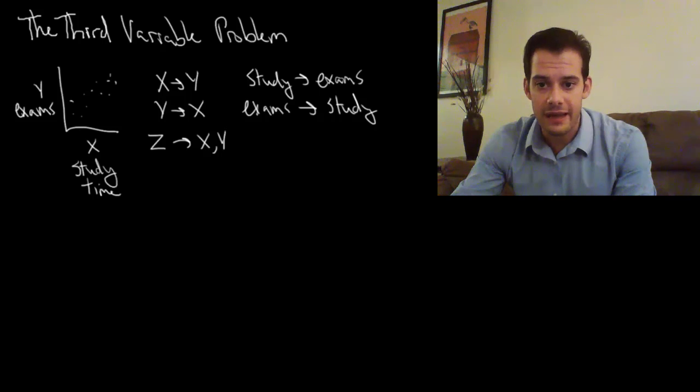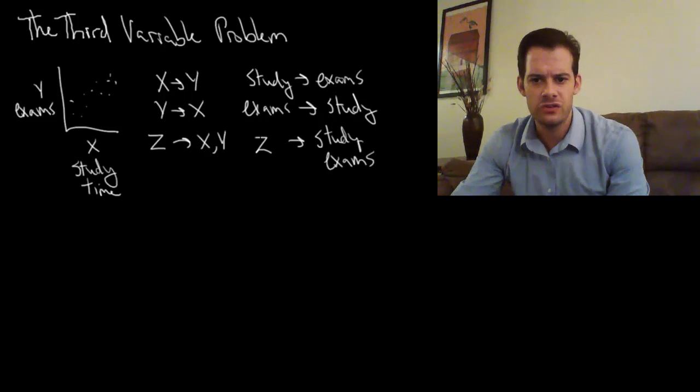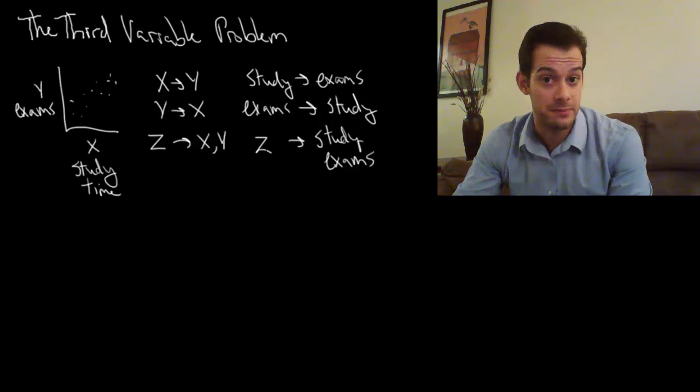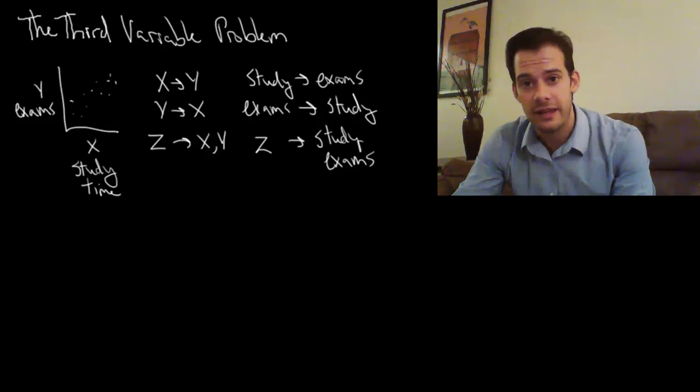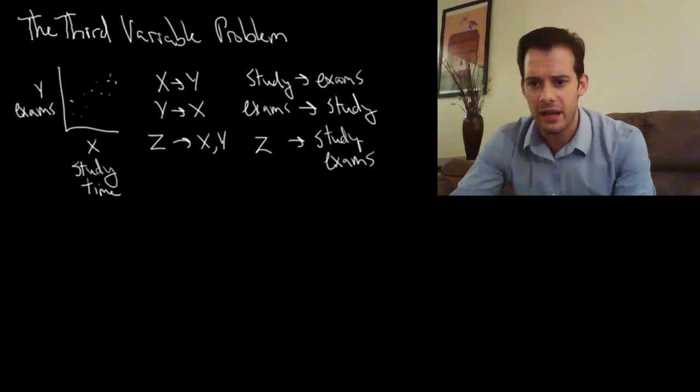Or it could be the case that some other thing, some other z, causes both study time to increase and exam scores to increase. So what could this z possibly be? Well it could be anything. But let's start with some plausible explanations.